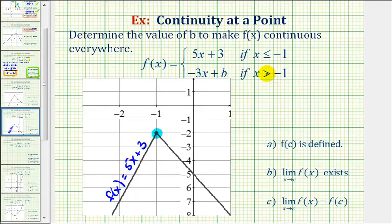And when x is greater than negative 1, this line here would be f of x equals negative 3x minus 5. And notice how this piece does have a y-intercept of negative 5, which is the value of b that we found. I hope you found this example helpful.